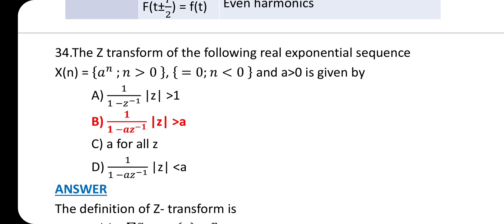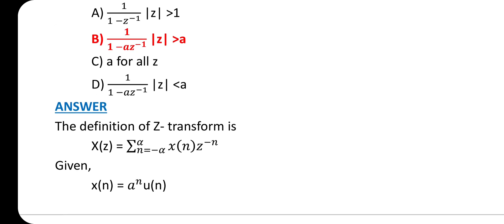Question 34: The z-transform of the following real exponential sequence x(n) = a^n, n ≥ 0 and x(n) = 0, n < 0, with a > 0 is given by option B: 1/(1 - az^(-1)) with |z| > a.